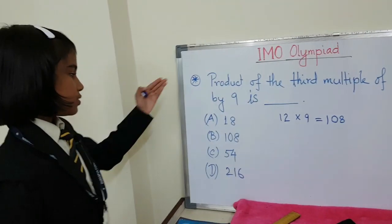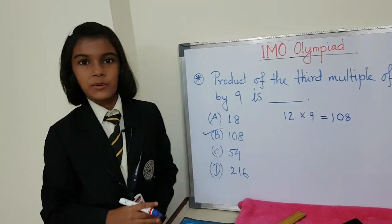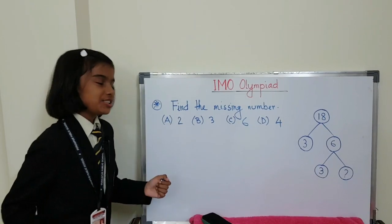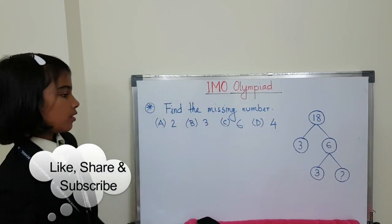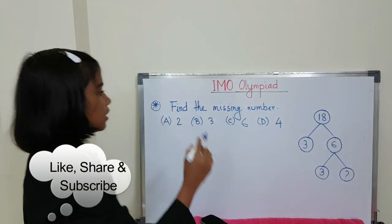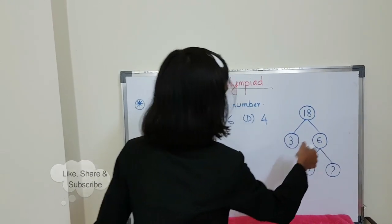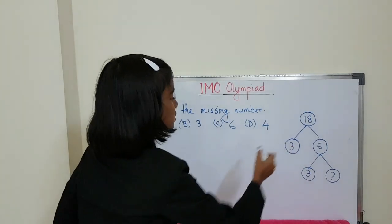So which one is the answer? Answer is B. Now let's do this question: find the missing number. We have to find this one. Over here, 18. In 18 there are two circles, 6 and 3. So 6 threes are 18.